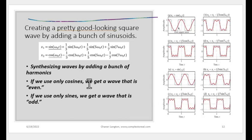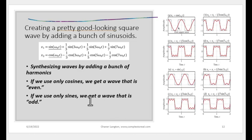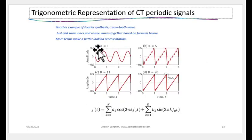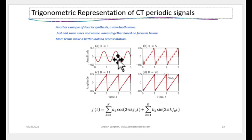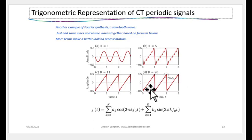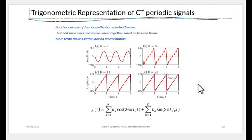If you use only cosines in the summation, you get an even wave. If you use only sines, you get an odd wave. Adding sines and cosines together and increasing the number of harmonics — 5, 11, 20 — by 20 harmonics you get a very good representation of a sawtooth wave. The small blip at the edges is called the Gibbs phenomenon, which you can read about in the book.